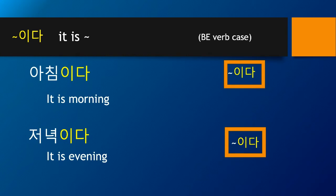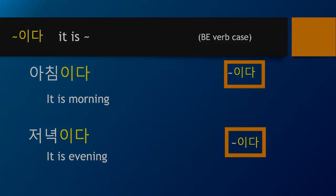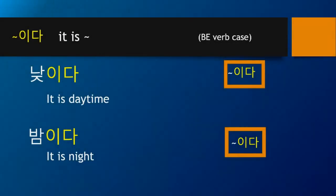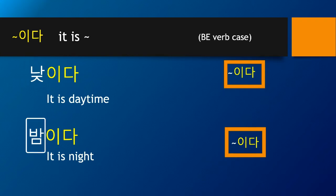For example, when somebody says 아침이다, that means it is morning. Another example of using 이다: 'it is daytime' is 낮이다, and 'it is night' is 밤이다. 낮 means daytime as a noun, and 밤 means night as a noun as well. So 낮이다, 밤이다.